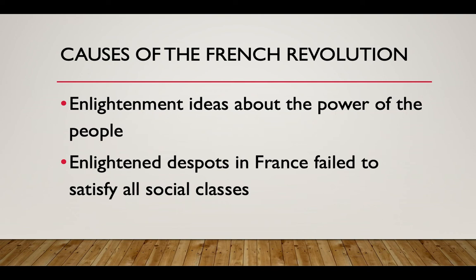There was also the idea that Enlightened despots — Enlightened leaders — were going to make changes. Louis XVI kind of set himself up, wanting to be considered an Enlightened absolute monarch just like his brother-in-law Joseph II of Austria. But you actually have to make reforms to get that title, and he fails to do so. He fails to satisfy the social classes because there are no Enlightenment-based reforms. He had helped the American colonists in the American Revolution, and people thought this would tie back into France, but he didn't follow through.